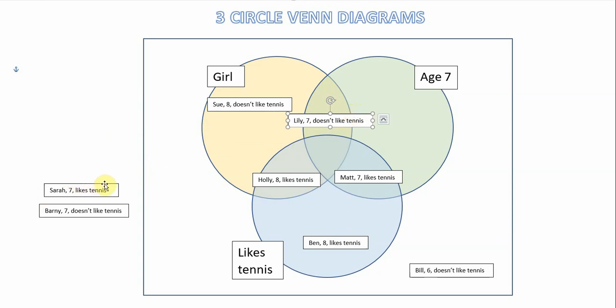Our next child is Sarah, who's also a girl. She is seven years old and she likes tennis. You'll notice that Sarah is actually in all of our three circle sets. So she goes right in the intersection of all three sets in this space just here.